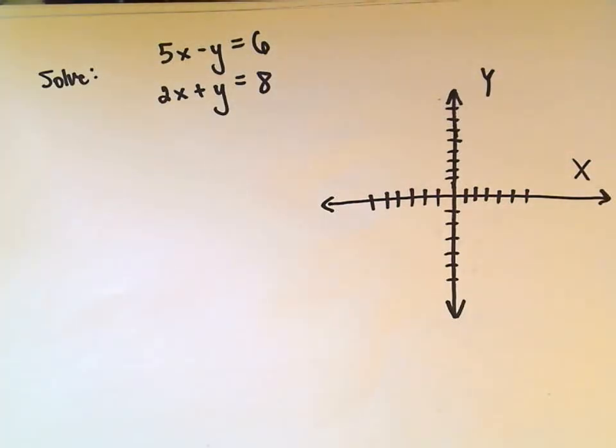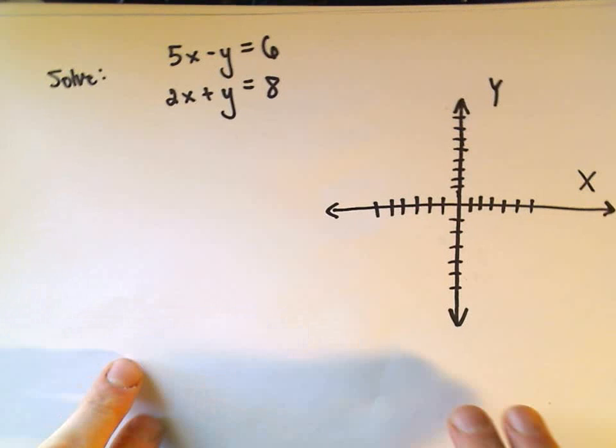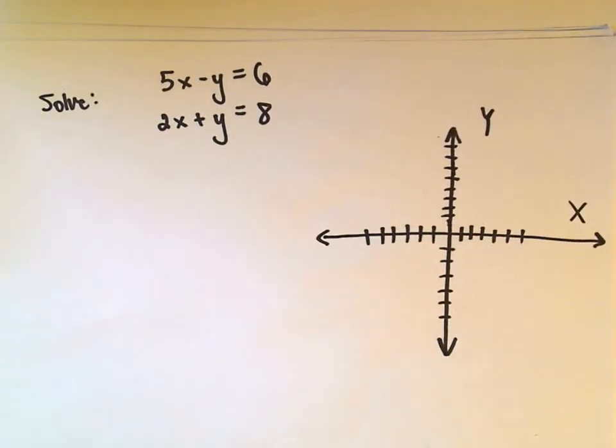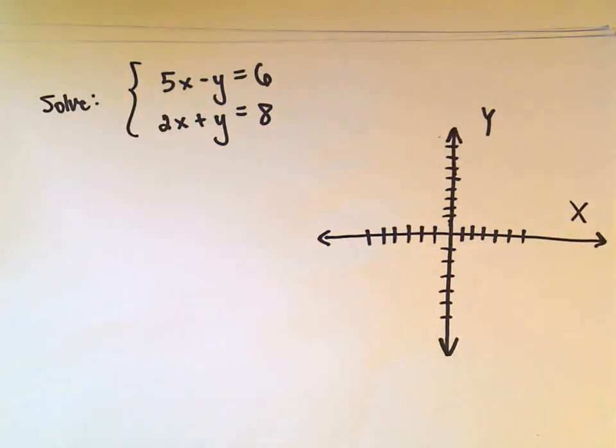Hopefully you remember how to graph linear equations, I'm going to step through that part a little bit more quickly. But hopefully review it a little bit. So, we want to solve this system of equations, 5x minus y equals 6 and 2x plus y equals 8.